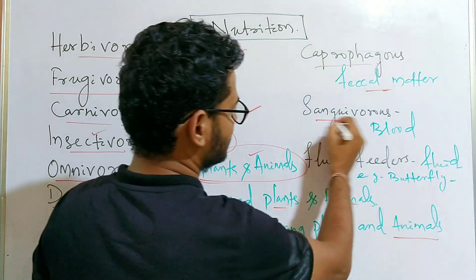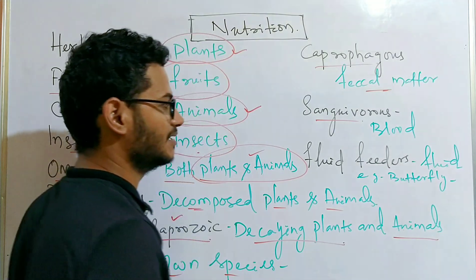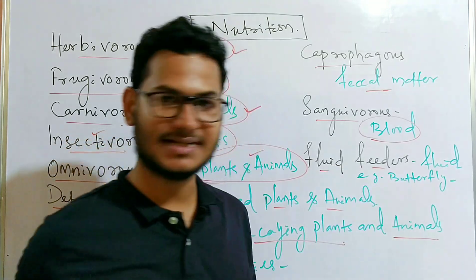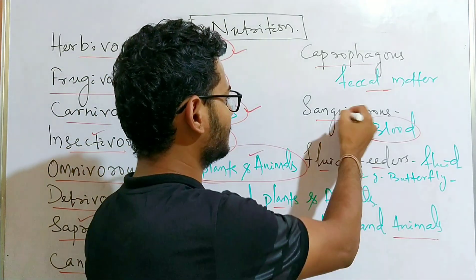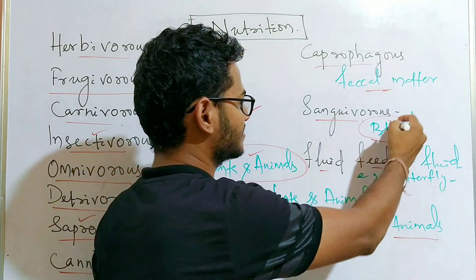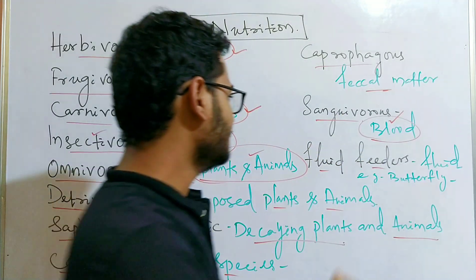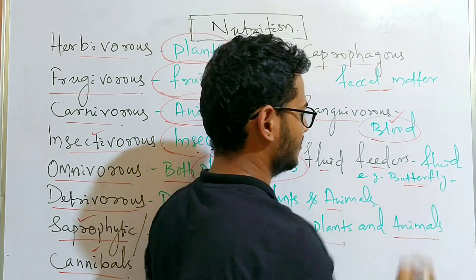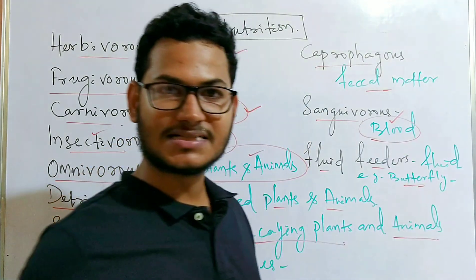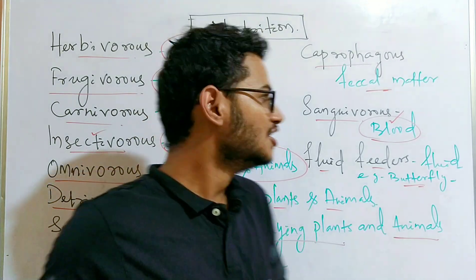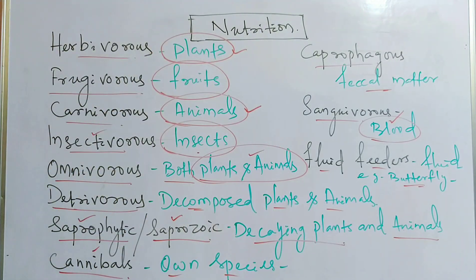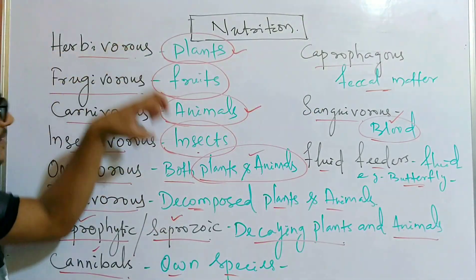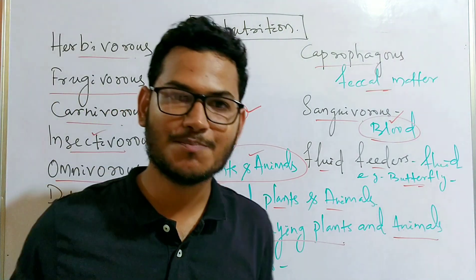Sanguivorous animals feed on blood. Fluid feeders are different from sanguivorous animals — while sanguivorous organisms feed on blood, fluid feeders can also include butterflies, which feed on fluid from different flowers. These are the various types of nutrition depending on what the organism feeds on.